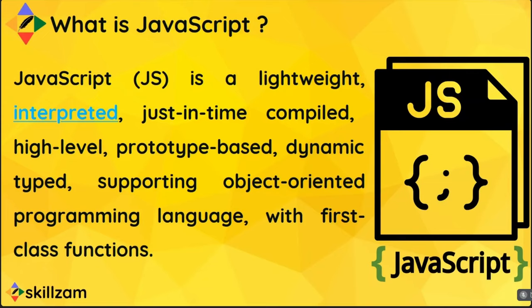JavaScript is also called an interpreted programming language, which means it is run without compiling. It is one where the instructions are not directly executed by the target machine. Instead, it is read and executed like some other programming languages. A popular example of another interpreted language is Python, whereas C and C++ are compiled programming languages.